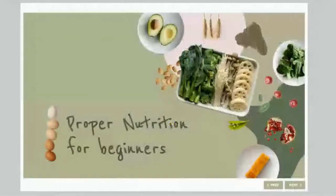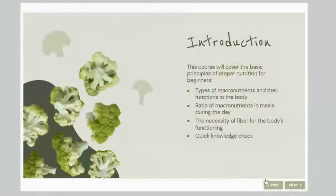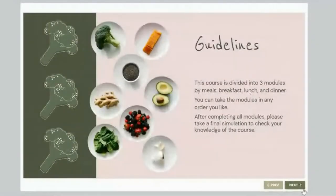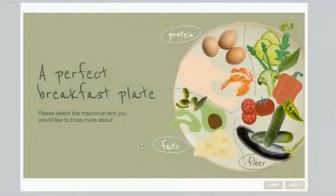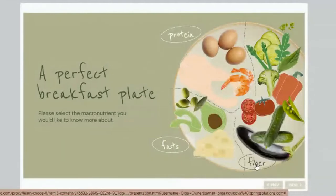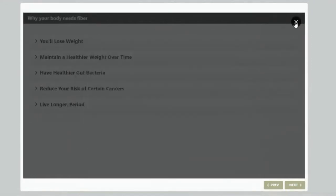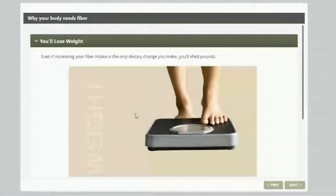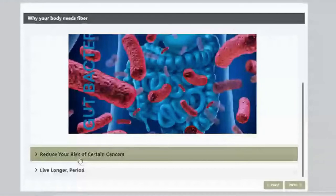Now let's dive into the practice. I'll switch to the course 'Proper Nutrition for Beginners,' which will help us learn about healthy food and balanced nutrition. At the beginning, we see the introduction and guidelines, and right away there's a branch scenario. Let's choose this plate. I'd like to learn more about fiber, so I'll click here — and I'm redirected to a slide with an interaction called FAQ in iSpring Suite. We use this interaction when we need to divide a topic into a few parts and provide learners with information about each component separately.